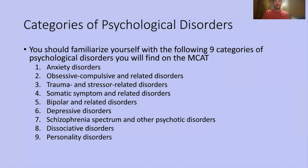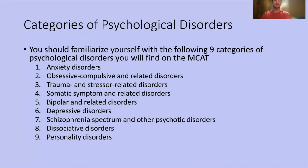You should familiarize yourself with the following nine categories of psychological disorders. You don't have to name all nine, but you should know what they are and probably at least one or two of the most common examples. For the rest of the lecture, we're going to go through all these different types of disorders and give quick examples. The nine categories are: anxiety disorders, OC and related disorders, trauma and stressor, somatic symptom and related, bipolar, depressive, schizophrenia spectrum and other psychotic disorders, dissociatives, and personality disorders.